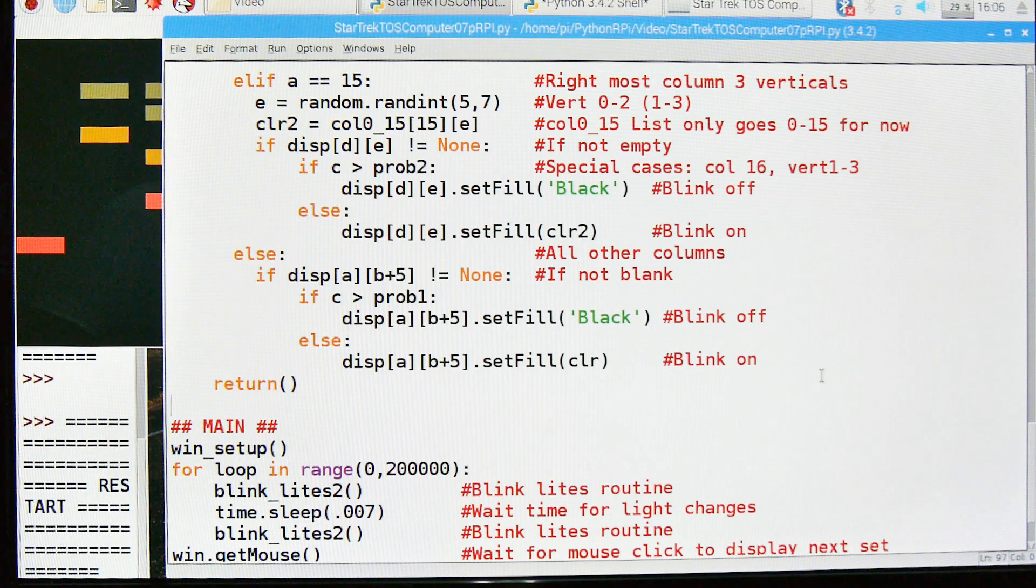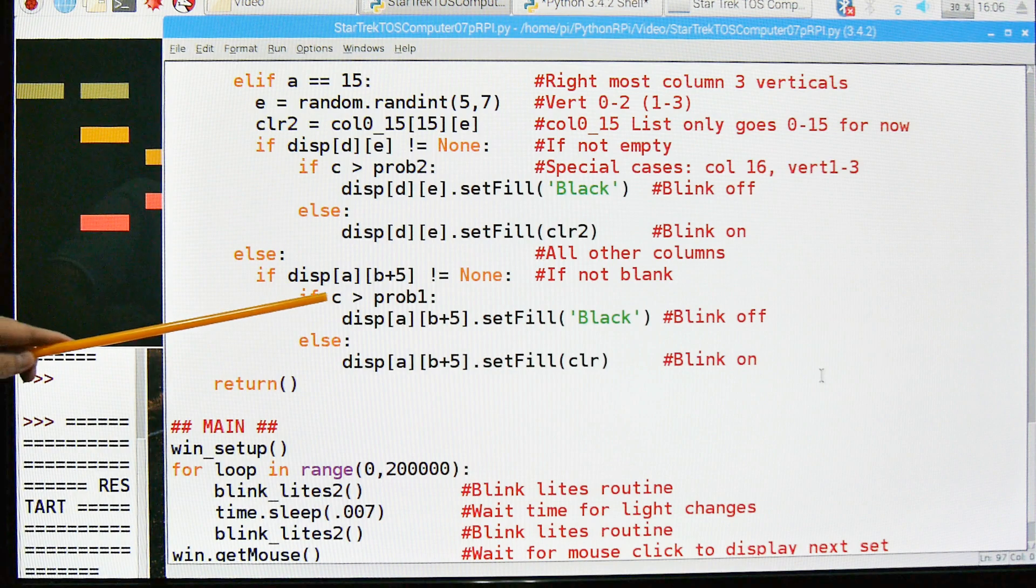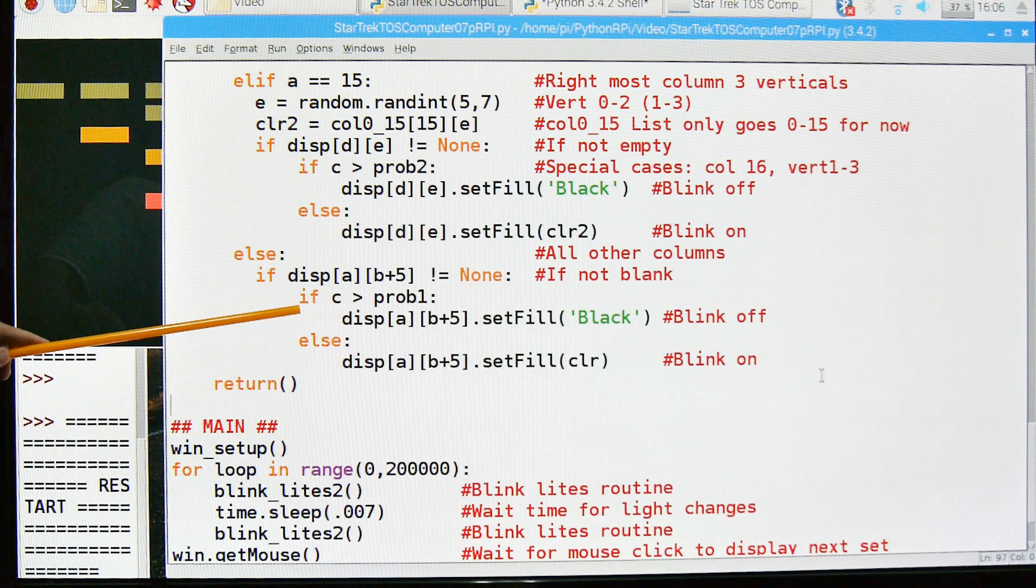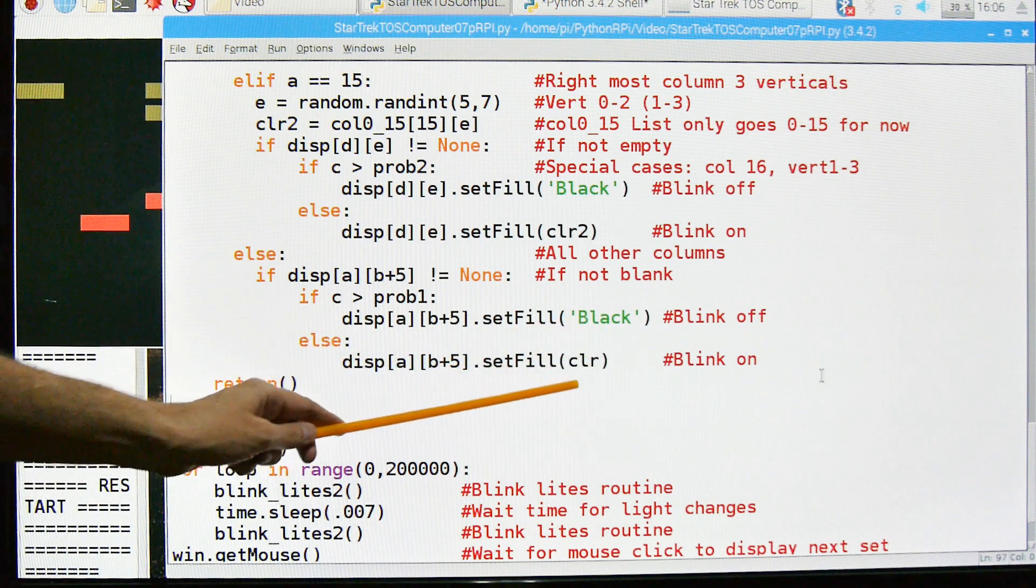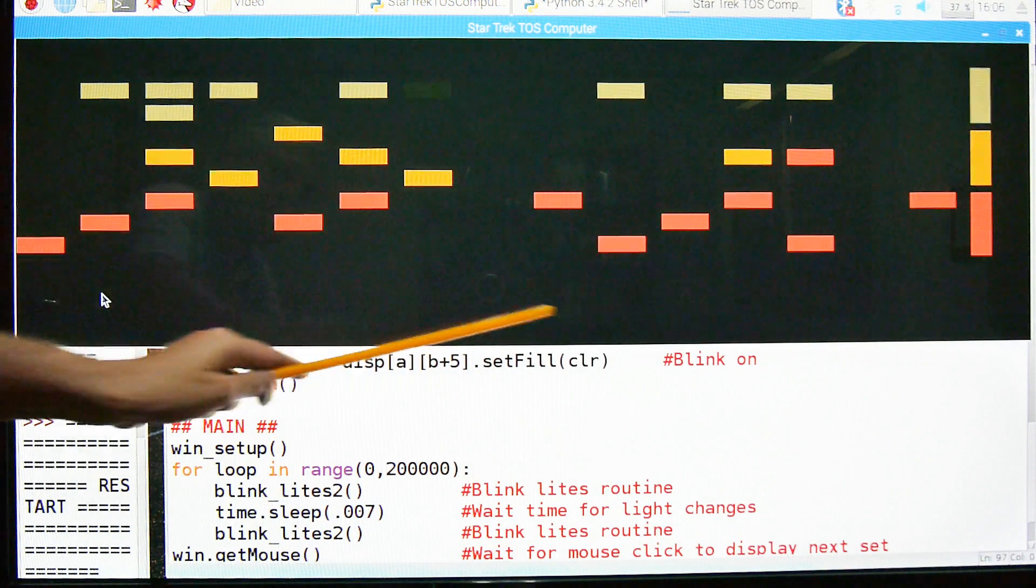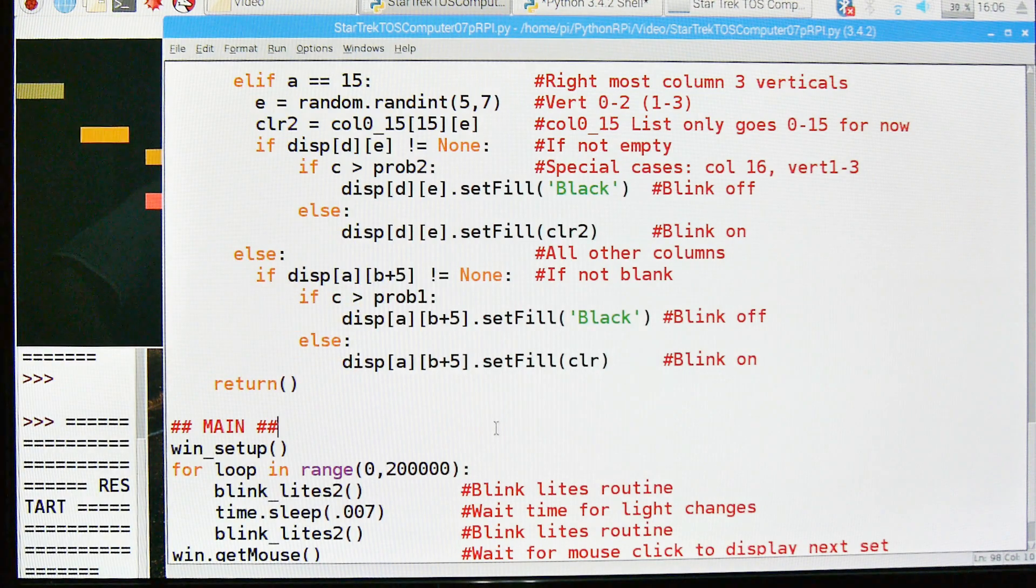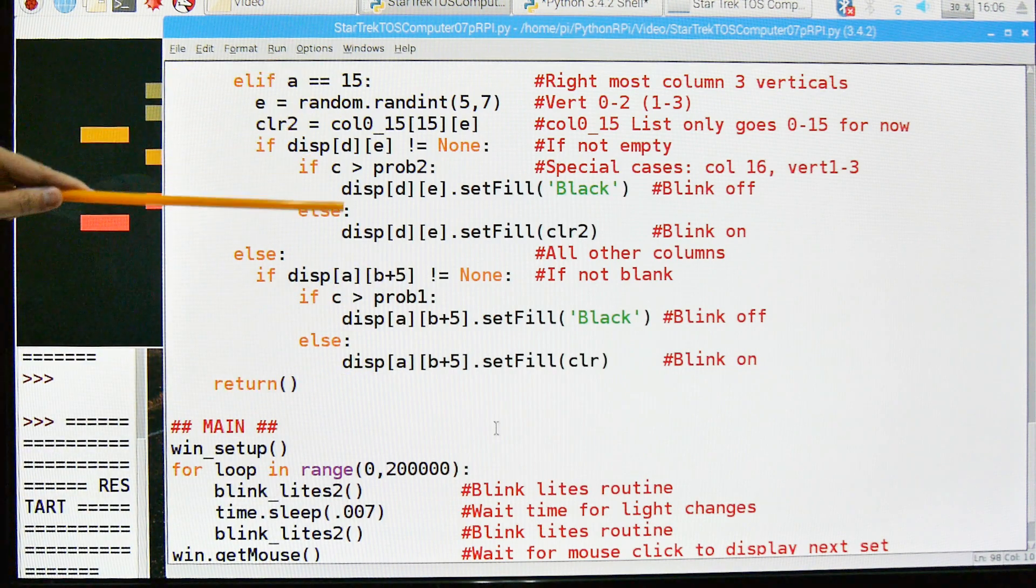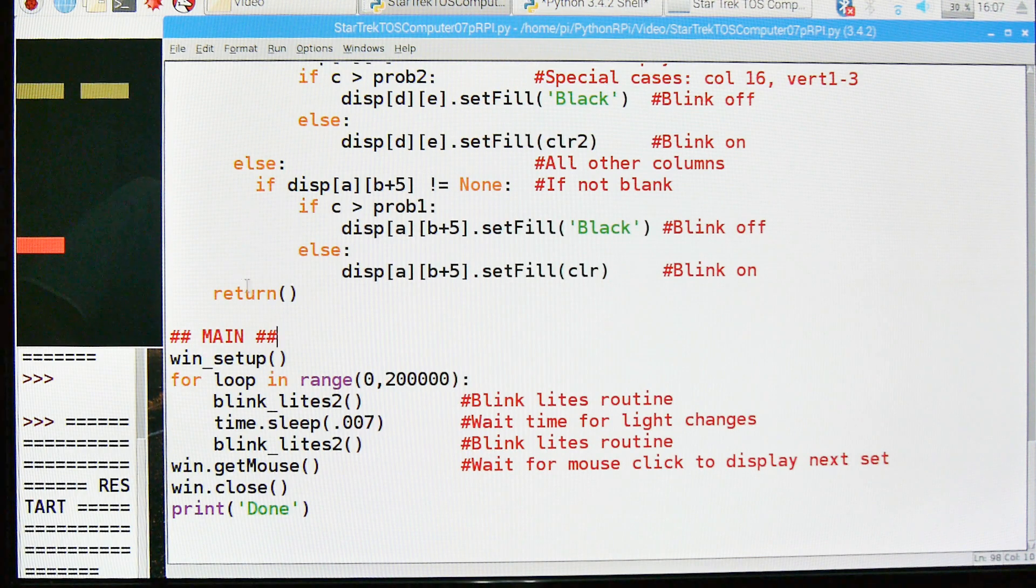So what we've covered so far is all the exceptions. Here is how to do just the normal things that are not exceptional. We just go and we look at, check to make sure that it's not a blank. And if it's not a blank, then we look at the probability and we either set the square, the rectangle to black, or we set it to its original color. And that's what all these others are doing. These few lines of code right here are handling the lion's share of the rectangles. And when it does that, it comes down here to return, goes back.